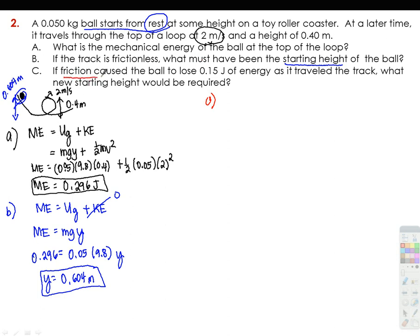For letter c, if friction caused the ball to lose 0.15 joules of energy as it traveled the track, what new starting height would be required? We'd expect the height to be higher than before, because friction loses energy, so we need more energy to make the ball go around the loop. Using conservation of energy, mechanical energy initial equals mechanical energy final, but now we need to account for the energy lost due to friction — subtracting the work done by friction.